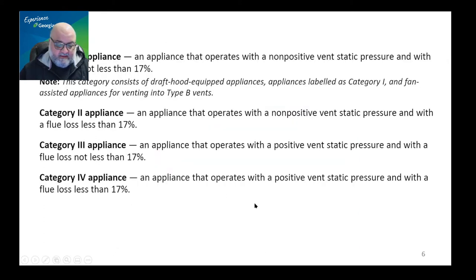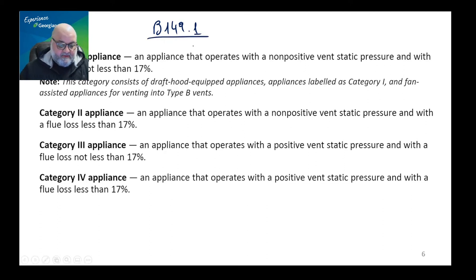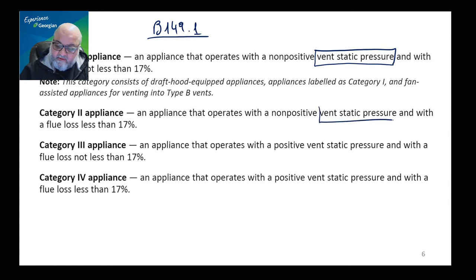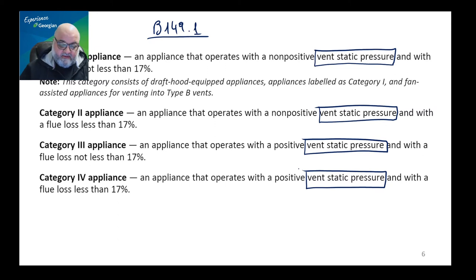This is in your codebook B149.1 in the definitions, and it mentions that there are four categories: one, two, three, and four. If you look closely at the definitions, an appliance that operates with a non-positive vent static pressure — the vent static pressure is one criteria mentioned in all four definitions. And the other criteria we have is flue loss, which is also mentioned in all four categories.